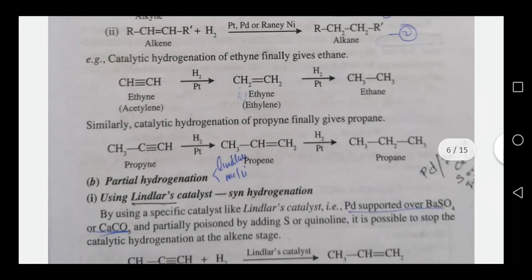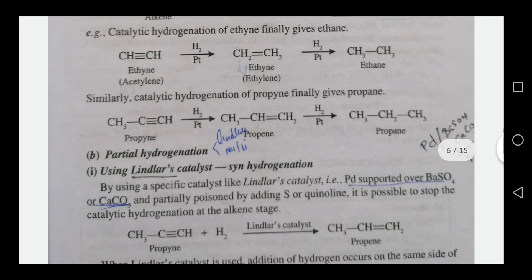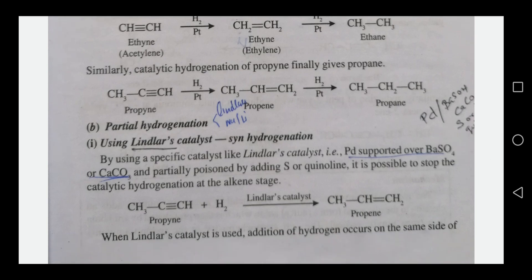Complete hydrogenation gives a single bond product — an alkane. Partial hydrogenation uses Lindlar's catalyst, which is a syn-addition. It is a stereoselective reaction: syn-hydrogenation. Lindlar's catalyst consists of palladium on barium sulphate or calcium carbonate, partially poisoned with sulfur or quinoline.